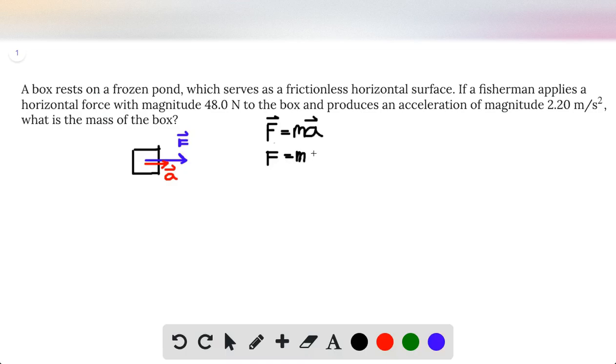So F is literally equal to mass times acceleration. We're given the force, we're given the acceleration, so we'll just divide through by acceleration on both sides in order to get that mass is equal to F divided by a.